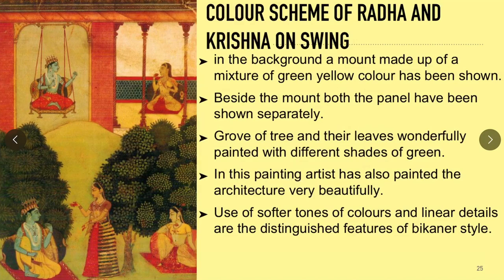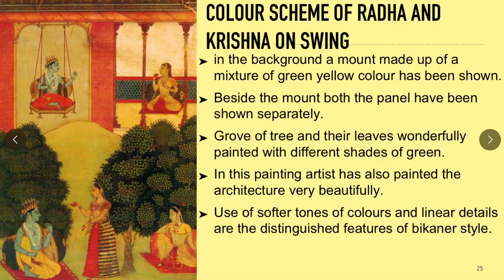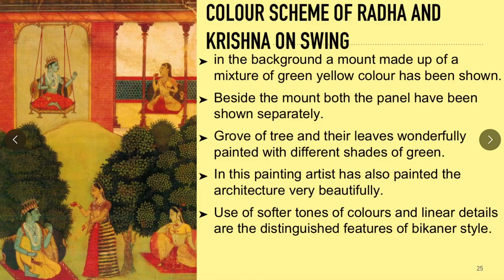Colour scheme: In the background, a mount made up of a mixture of green and yellow color has been shown. Beside the mount, both the panels have been shown separately. In this painting, the artist has also painted the architecture very beautifully. Use of softer tones of colors and linear details are the distinguished features of the Bikaner style.